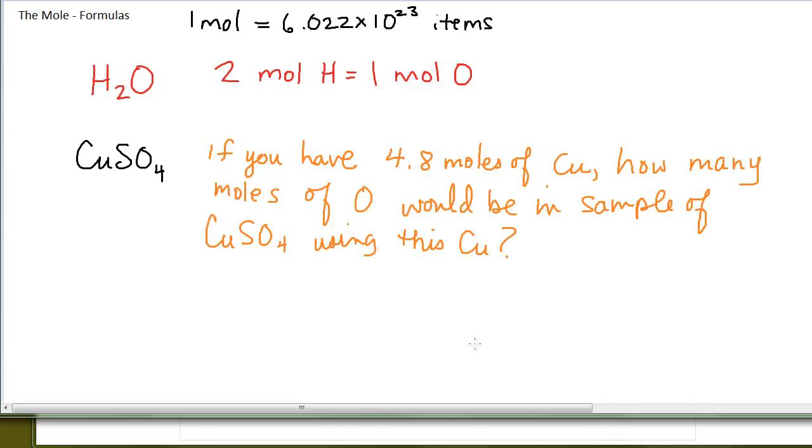This problem may seem a little contrived, and it sort of is, but it demonstrates the fact that we can calculate from moles of one element in a compound to moles of another element in a compound. It's just a unit conversion problem. How many moles of O equals 4.8 moles of Cu? In my ratio, moles of Cu on bottom, moles of O on top.